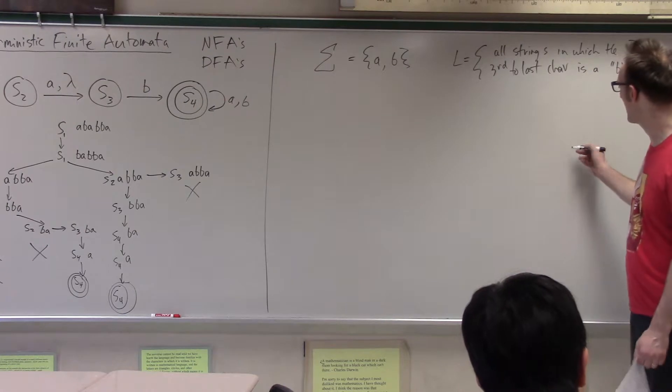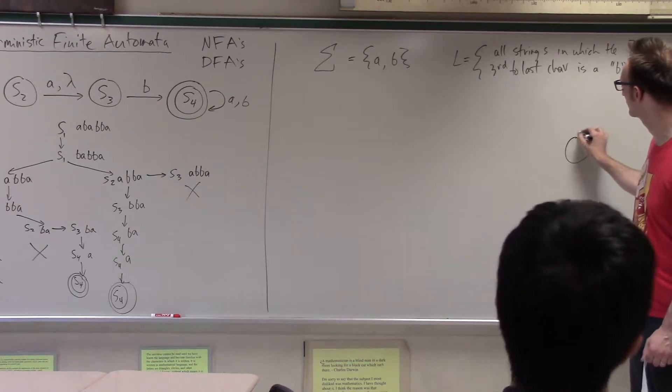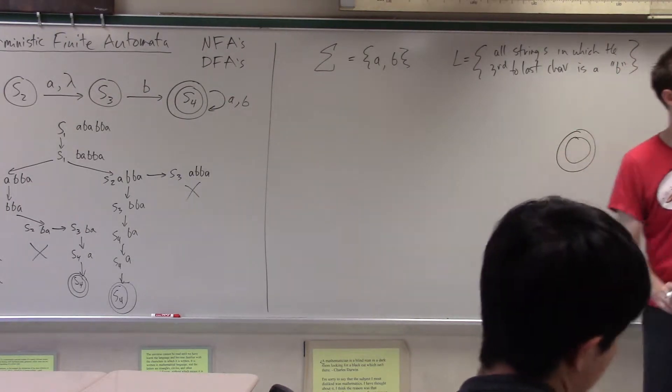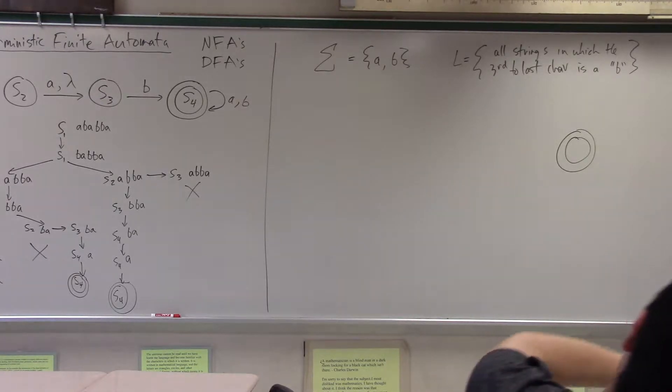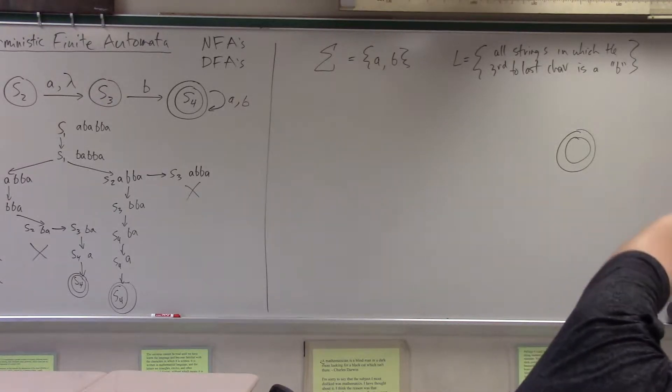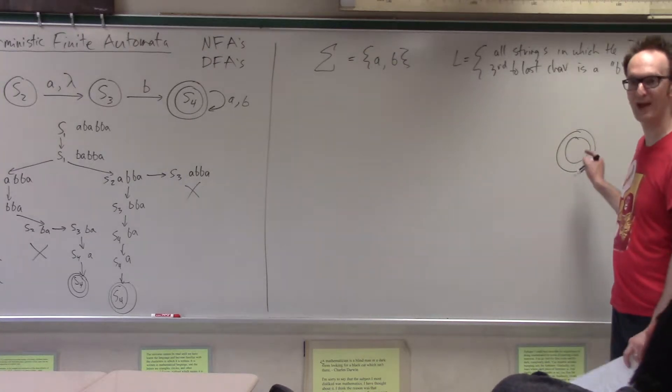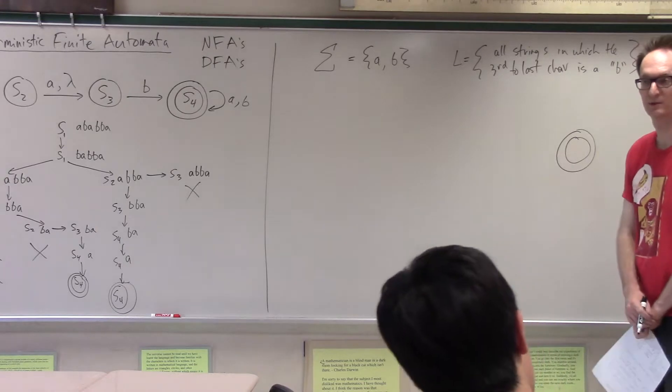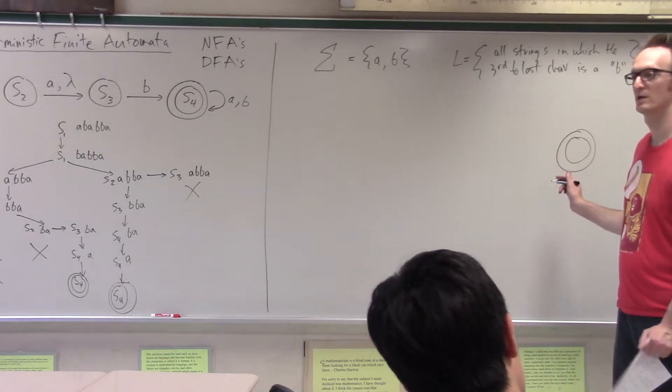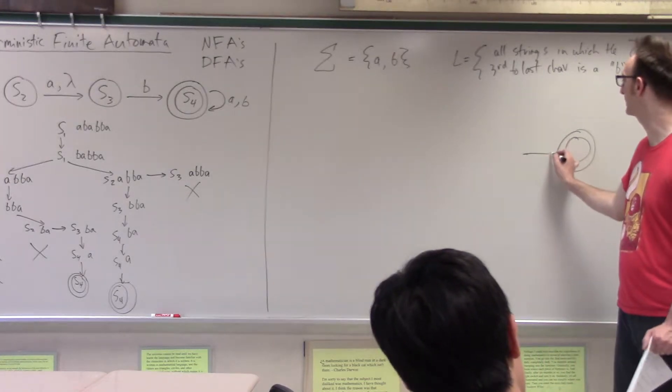Here I am in my accept state, right? What does it take, what did it take to get me here? The B. My third to last character was a B. So explain the path to an accept state intuitively. The last two characters are anything.